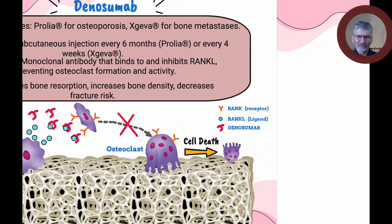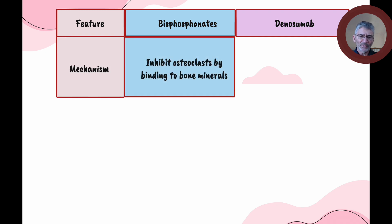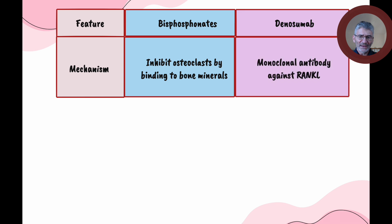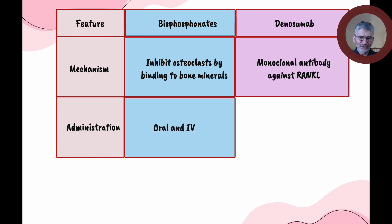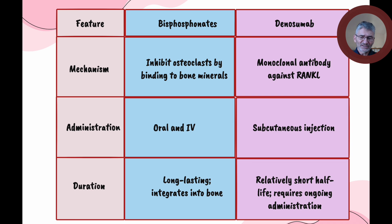Comparing bisphosphonates and denosumab: their mechanism of action differs in that bisphosphonates inhibit osteoclasts by binding to bone minerals, whereas denosumab is a monoclonal antibody. As for administration, bisphosphonates are usually given orally but can be given IV as well, while denosumab is given as a subcutaneous injection. Regarding duration, bisphosphonates have long-lasting action because they're integrated into the bone itself, whereas denosumab has a relatively short half-life and requires ongoing administration. Thanks for watching, and remember to subscribe and like the video. We look forward to seeing you next time.